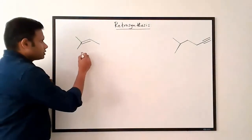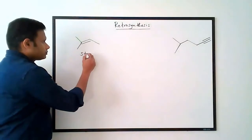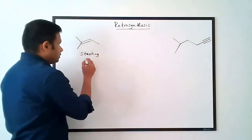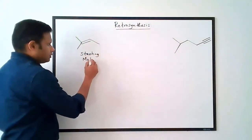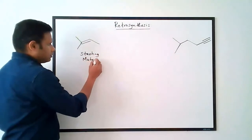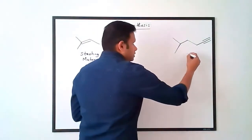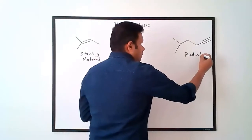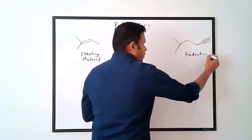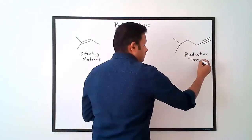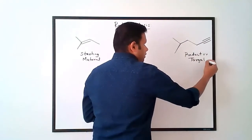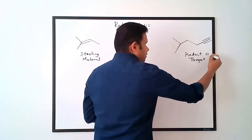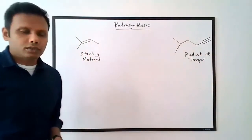This is the given starting material and here's our product, or target, that we want to make. That's what we're trying to get to.